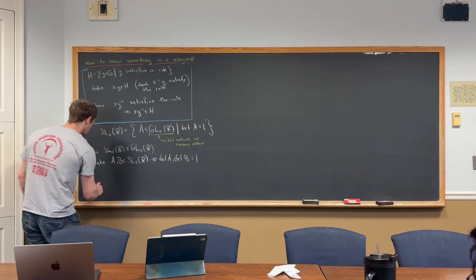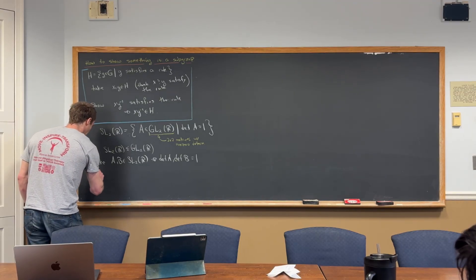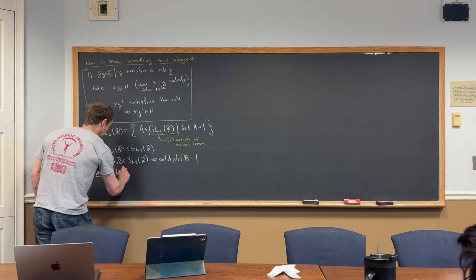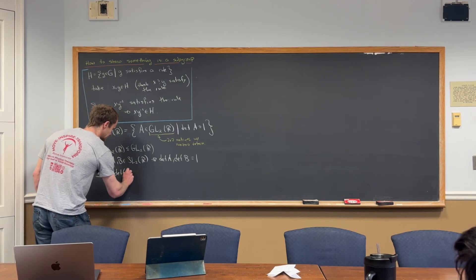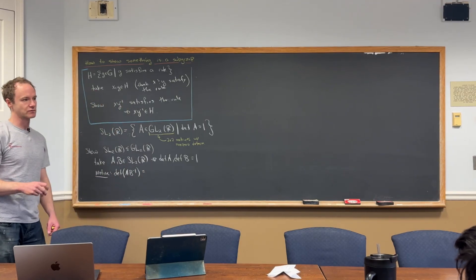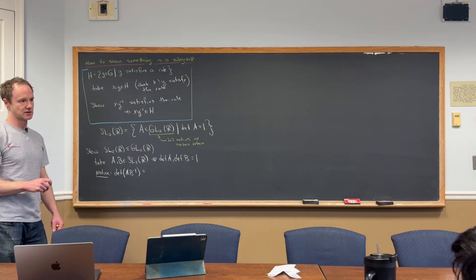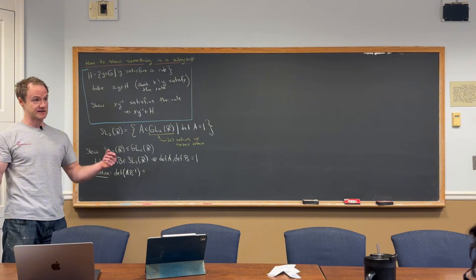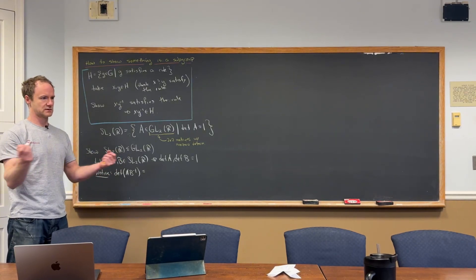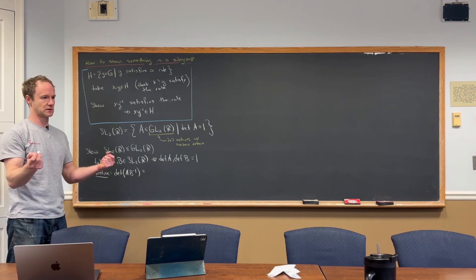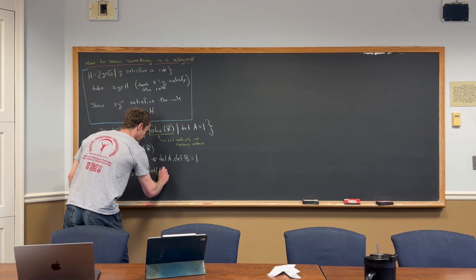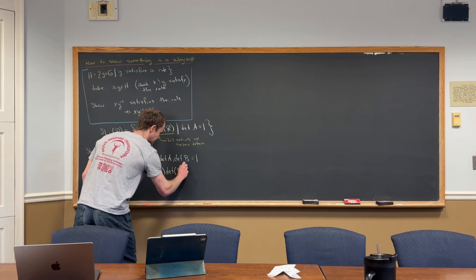And now let's notice that if we take the determinant of A times B inverse, well, now we're going to use some rules from linear algebra. So the determinant of a product is the same thing as the product of the determinant—it's like a rule. So this turns into the determinant of A times the determinant of B inverse.